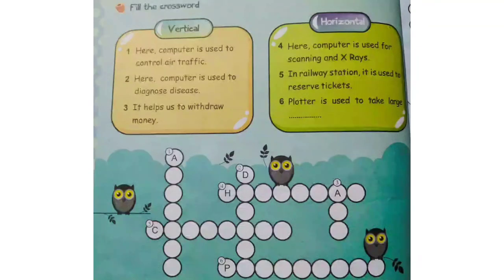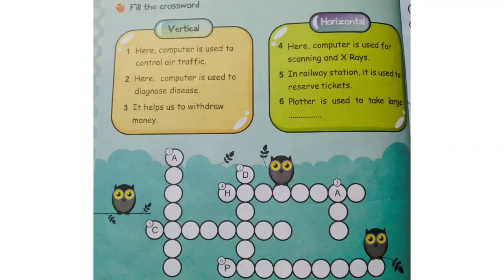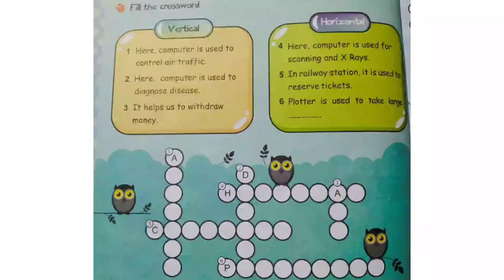Fill the crossword. First, let's look at the vertical questions and answers. Here, the first question: a computer is used to control air traffic. Your answer is airport. Airport.